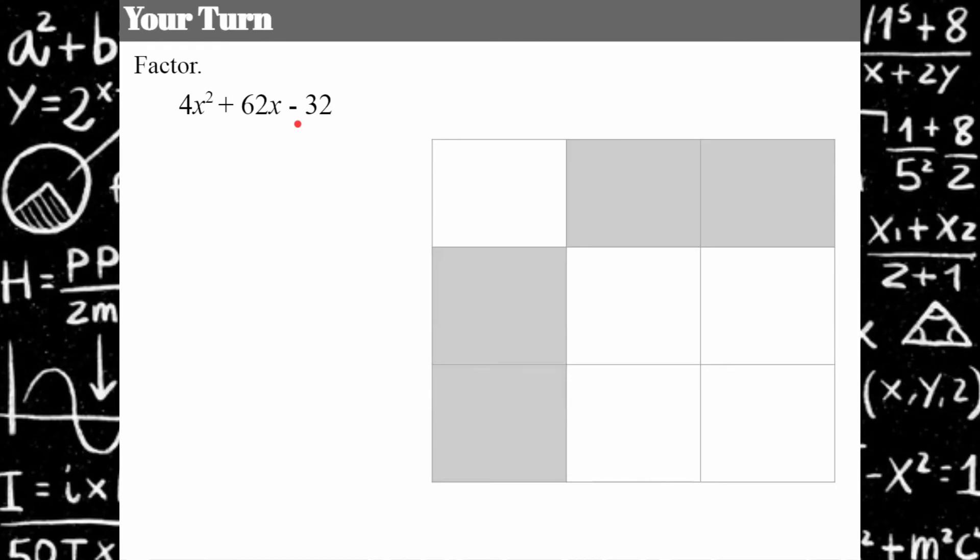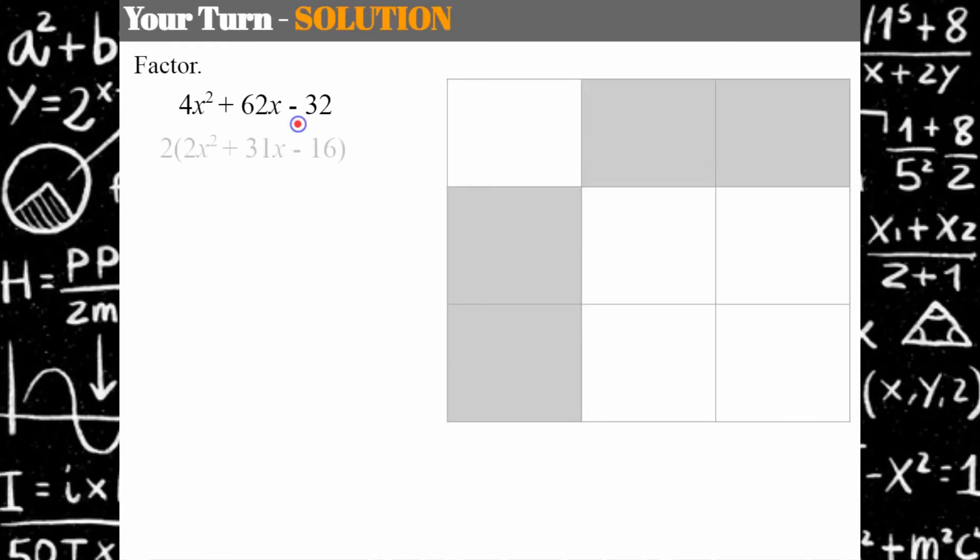Welcome back. Let's see how you did. The first thing I had to do was notice that each one of these terms had a common factor of 2. The next thing I'm going to do right away is set up my answer so that I don't lose this 2, because the 2, that greatest common factor, has to be part of your solution.